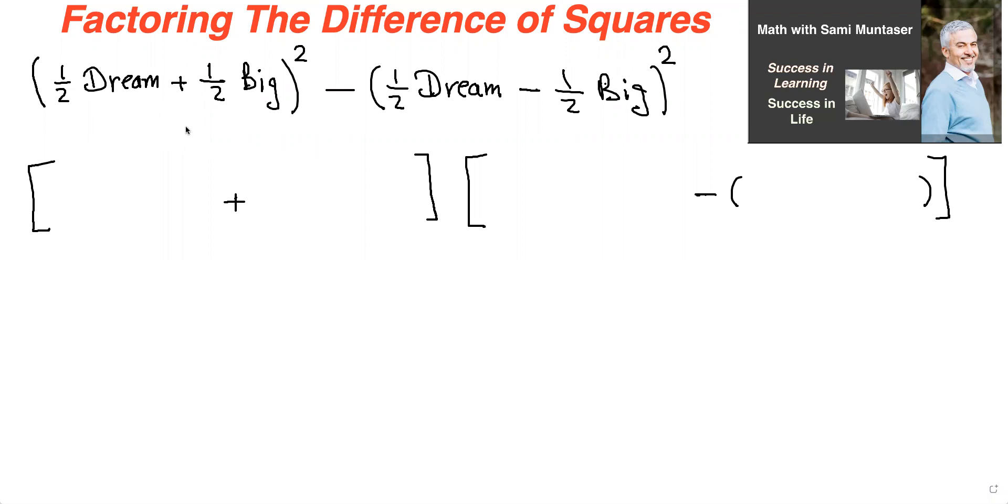So just look at all of this as the x squared minus, look at all of this as the y squared. So it'll be x minus y, x plus y, or x plus y, x minus y.